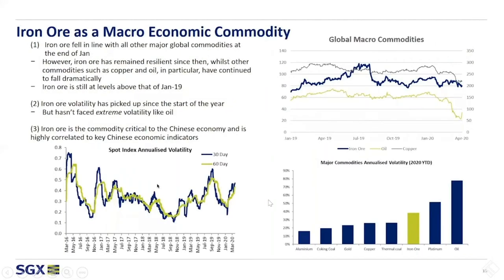Finally, on iron ore, I would like to outline the importance of iron ore as a macroeconomic commodity. This chart at the top shows that iron ore fell in line with other major global commodities at the end of January. But then it looks like a correction, because the price stabilized while commodities like oil and copper continued to fall, with oil taking negative prices. Iron ore is one of the commodities that is critical to the Chinese economy and is highly correlated to key Chinese economic indicators.